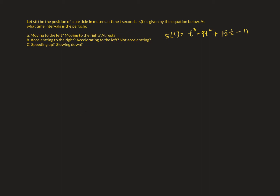Part A: moving to the left, moving to the right, and at rest — those will have to do with velocity. Moving to the left is when the velocity is less than zero. Moving right is when it's greater than zero. And not moving, or at rest, is when the velocity equals zero.